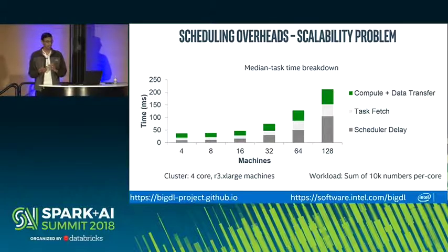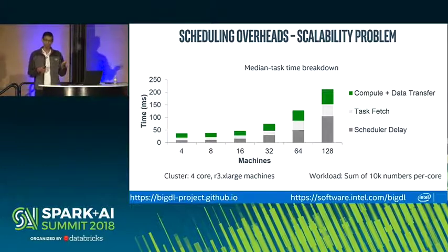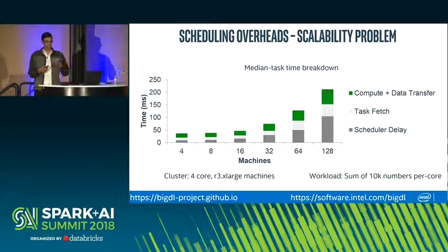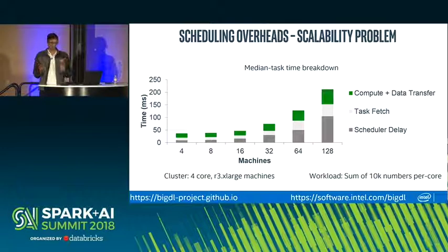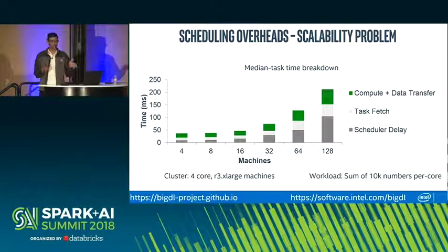A micro-benchmark comparing scheduling overhead as we increase from 4 machines to 128 machines — each with four cores — shows that task fetch and scheduler delay increase from less than 10–20 milliseconds at the four-machine range to around 150 milliseconds at the 128-machine installation.